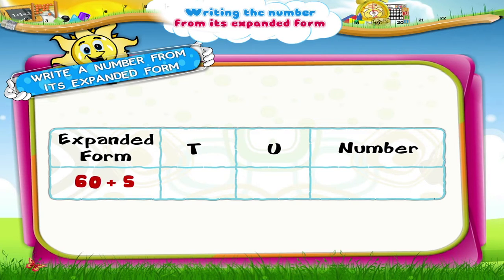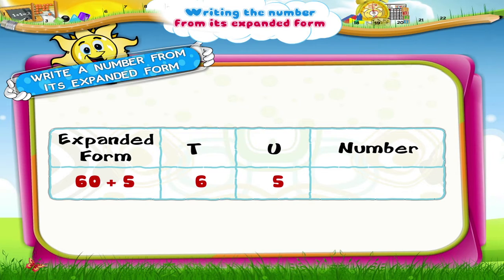The place value of the digit 6 is given as 60, so 6 must be placed in the tens place. The place value of the digit 5 is given as 5, so 5 must be placed in the units place. So, we have 60 plus 5 as 65.